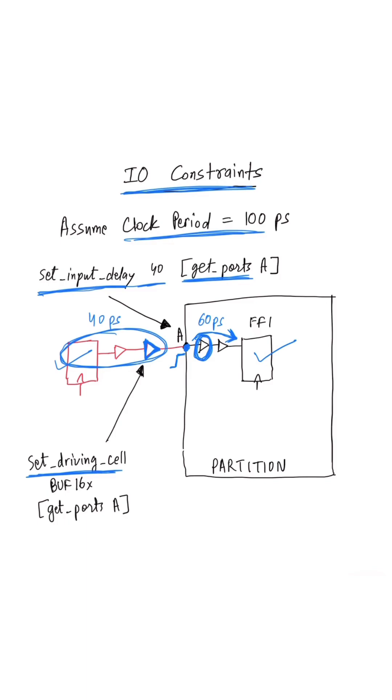In the set driving cell constraint, we basically specify a reasonably strong driver cell to get a good estimate of the transition values, which again helps with the timing analysis.